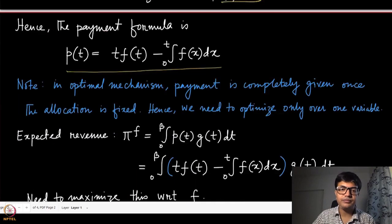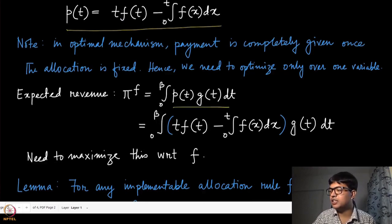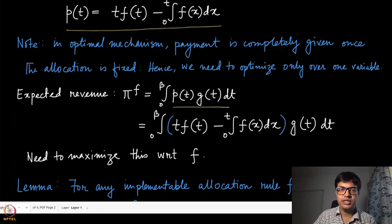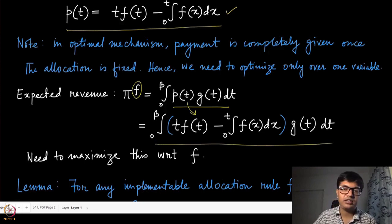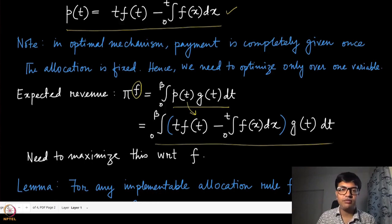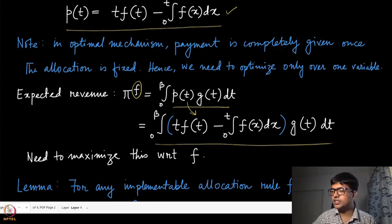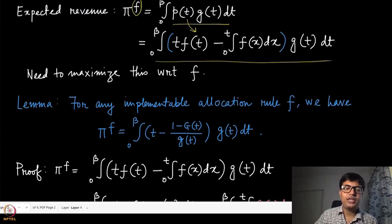This simplifies the expression for the optimal mechanism: the payment reduces to the remaining integral form only. The expected revenue is therefore given entirely by the allocation rule f — once you fix the allocation rule, you exactly know the payment formula. We can expand this by replacing p(t) appropriately to find the expected revenue, which is what we maximize with respect to f, subject to the condition that f is non-decreasing (the IC requirement).